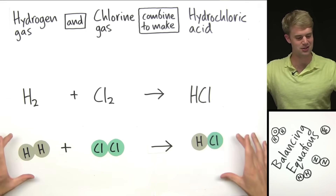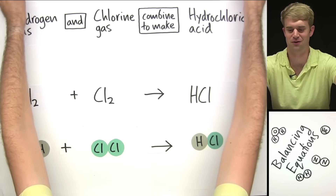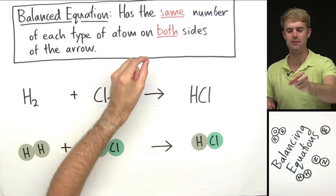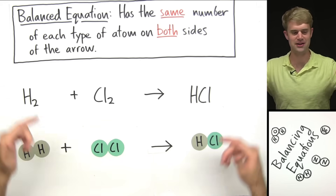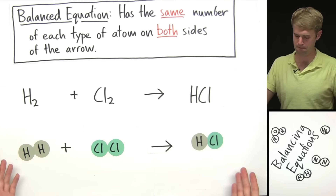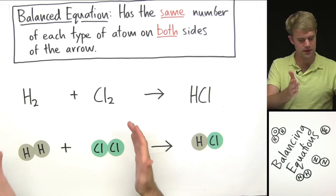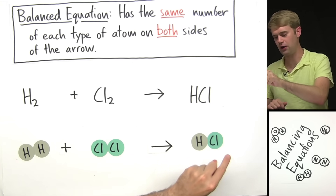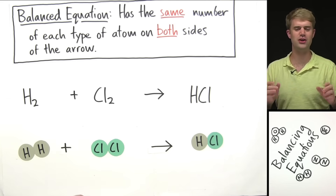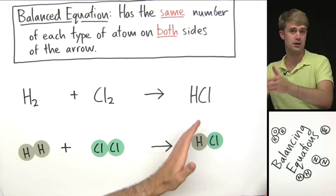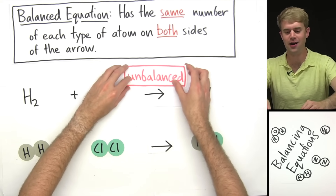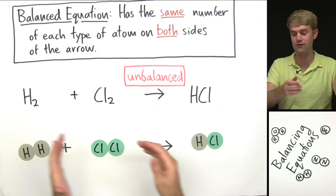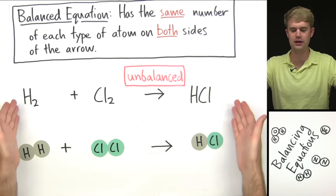First, I want to figure out whether this equation is balanced. A balanced equation has the same number of each type of atom on both sides of the arrow. Is this a balanced equation? No, it's not. On the left side I have two hydrogen atoms; on the right I only have one. On the left I have two chlorines; on the right I only have one. So this is an unbalanced equation — it has different numbers of one or more atom types on the two sides.